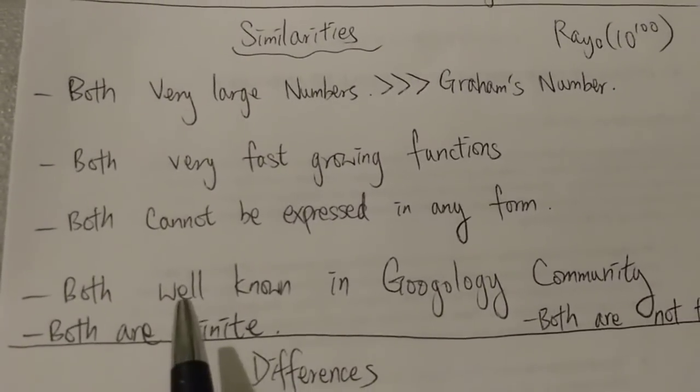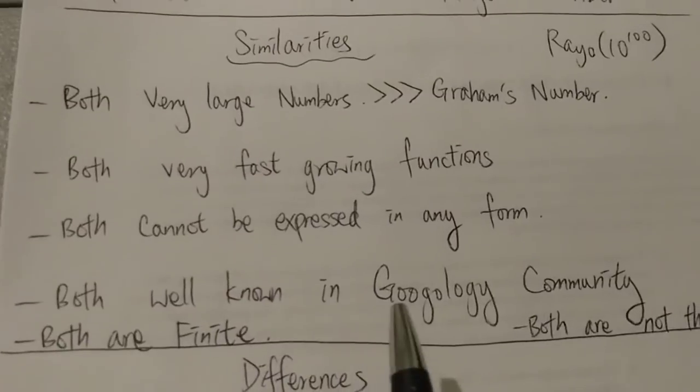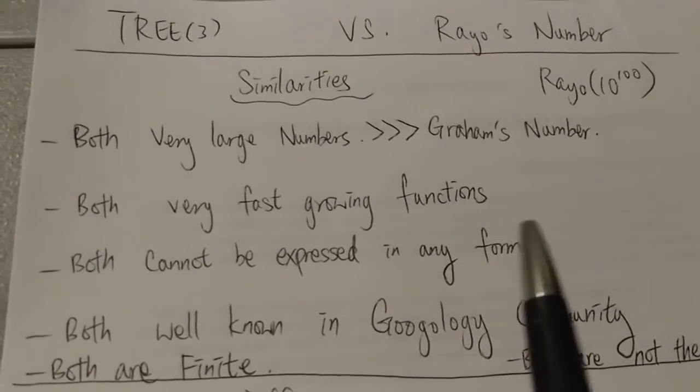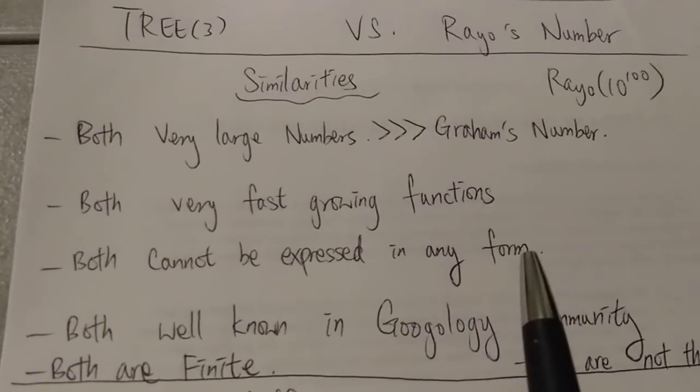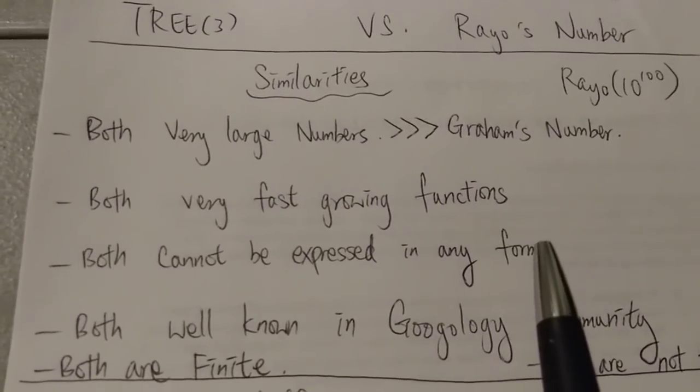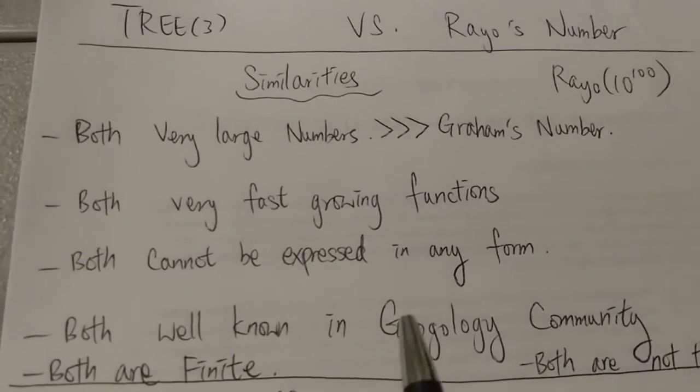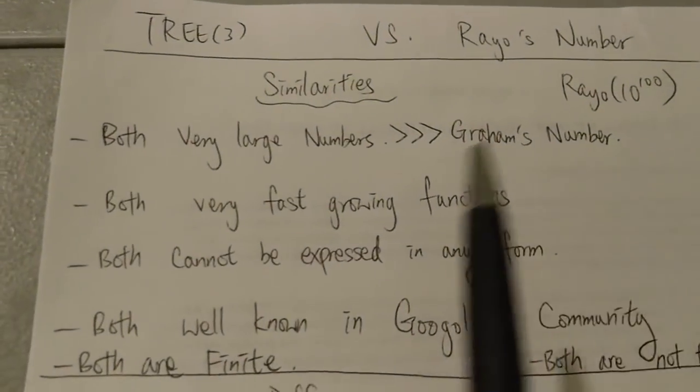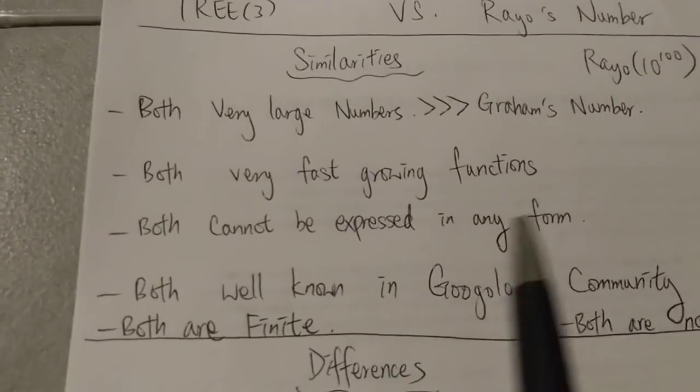And then next, both are very well known in the Googleology community. So TREE(3) and Rayo's number, they are one of the most famous big numbers in the Googleology community, of course along with Graham's number and maybe googolplex.